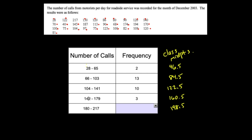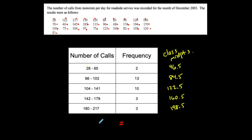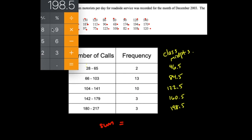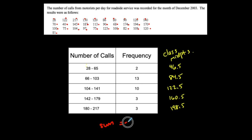Now 180 to 217 should be the rest: 1, 2, 3 — so that frequency is 3. I filled in my frequency column, but I always like to make sure that the sum of the frequency column equals the number of data values in the data set. I had 31 values in the data set. So 2 plus 13 plus 10 plus 3 plus 3 should be 31 — and it is, which means I included all of the values in the data set.